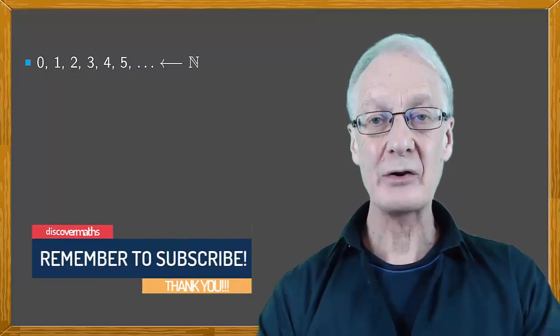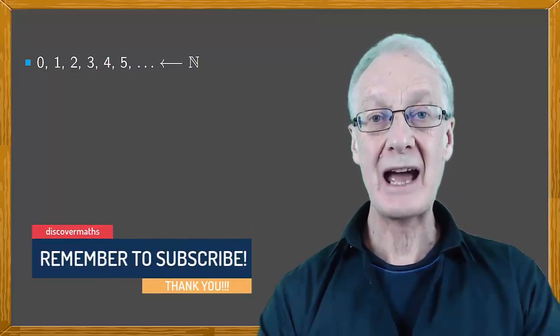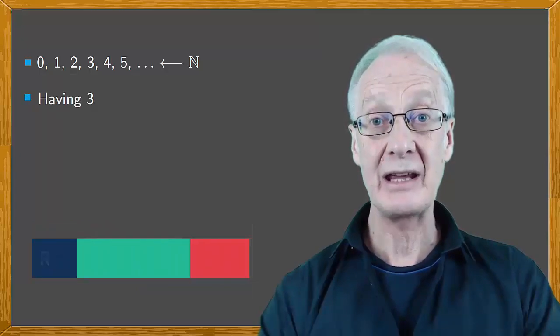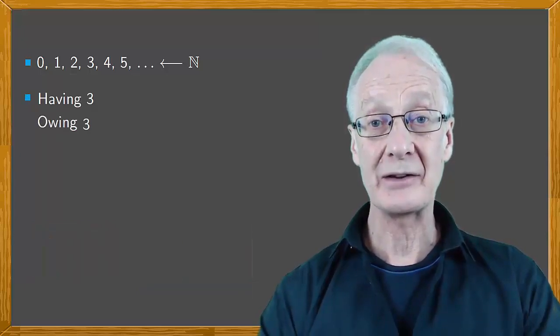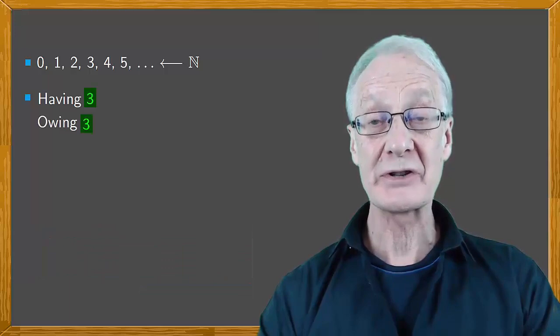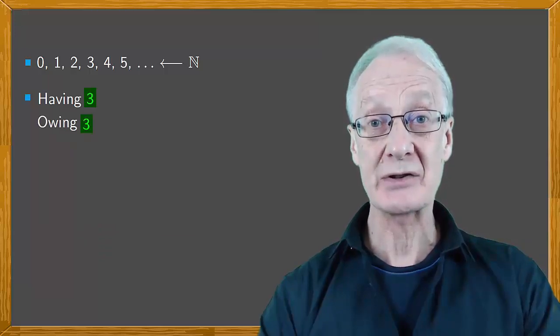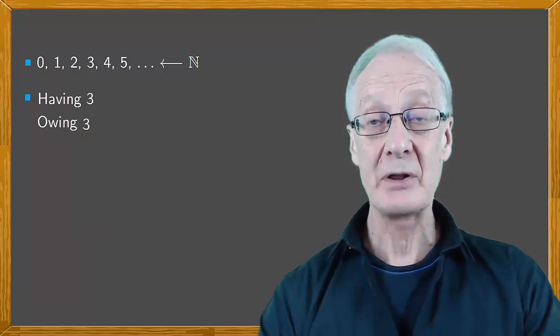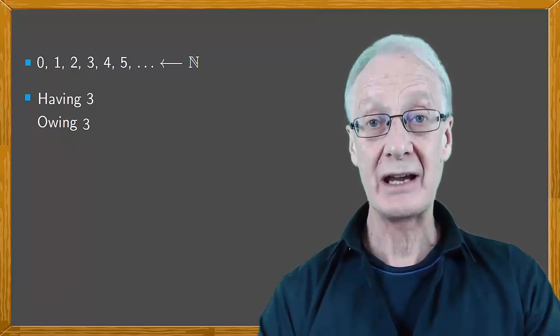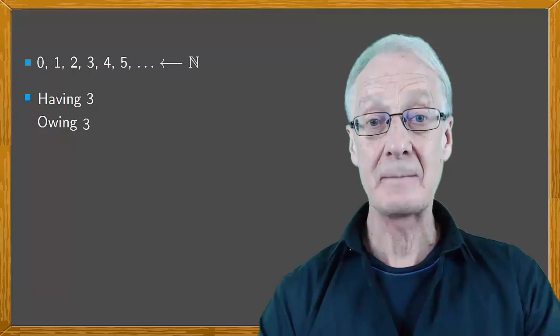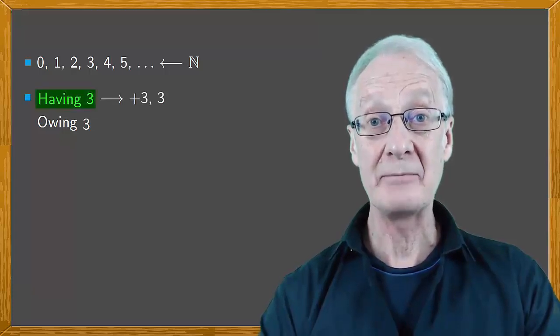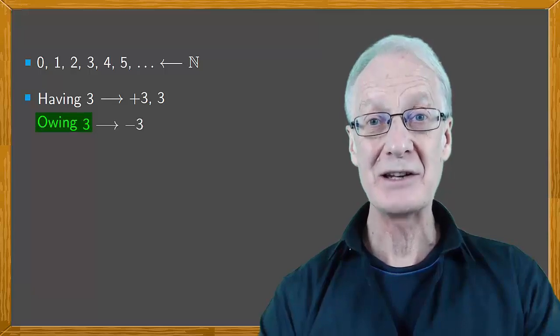Now, in maths, how can we indicate the difference between having three things and owing three things? The magnitude, or size, is the same in each case: 3. But there are obviously different situations. The solution is to include a sign, positive or negative, so that having three things is shown by plus 3, and owing by minus 3.